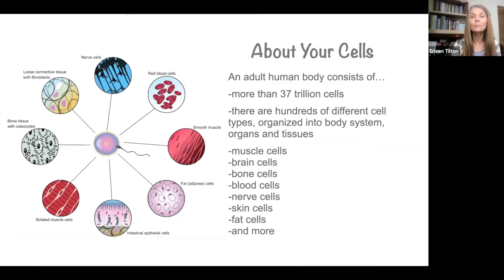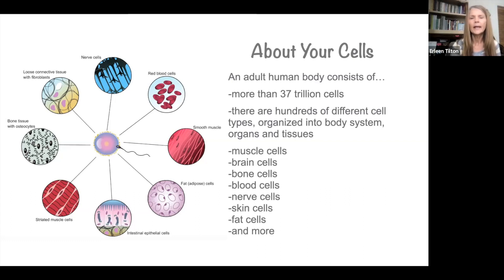The adult human body consists of more than 37 trillion cells. That's amazing when you stop and think about 37 trillion cells. We have many different types of cells — we know some of these by name, but there are actually hundreds of different types of cells in our body. They're all different, and they have different functions. And we have a system that really helps our cells perform.